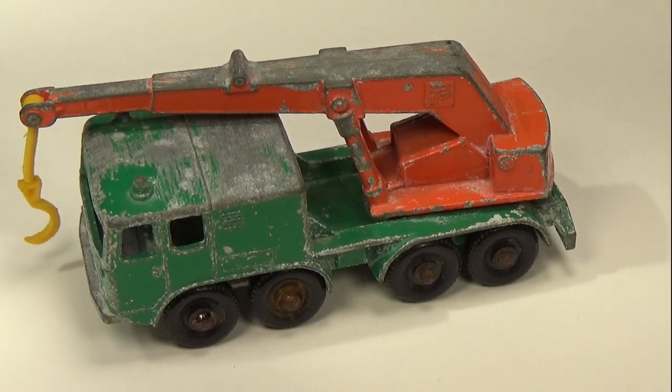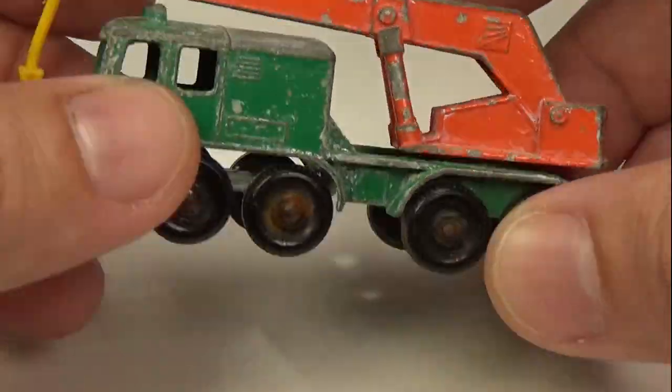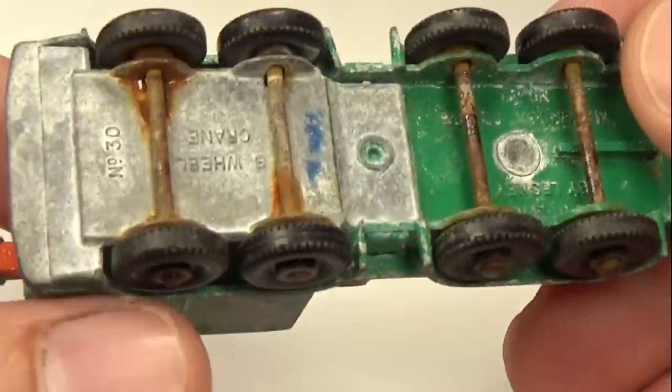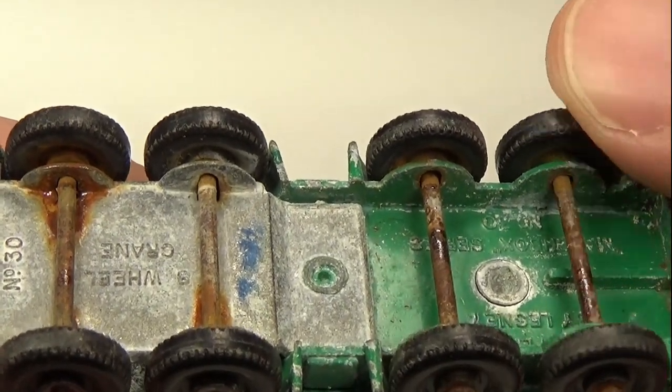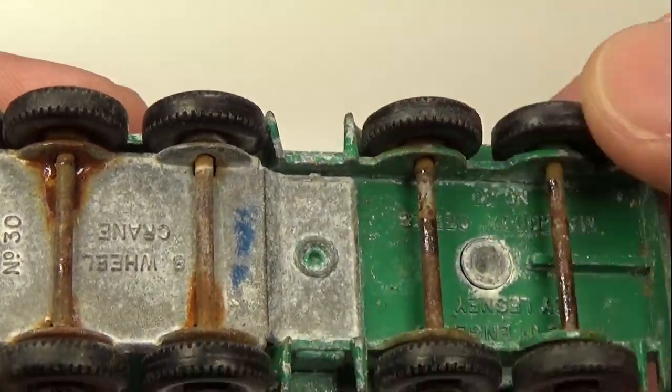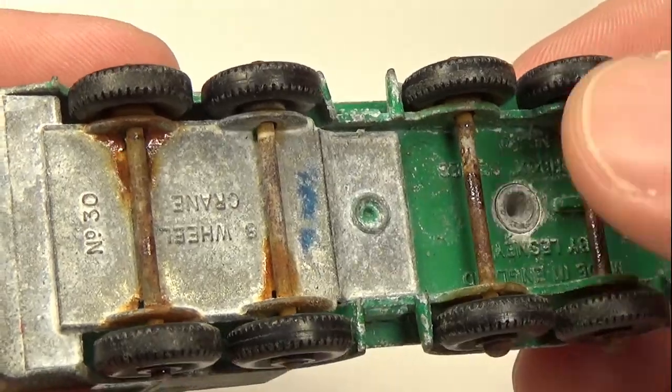This is a Matchbox number 30 8-wheel crane, manufactured around 1965 by Lesney. Lesney produced many models such as this with permanently affixed axles. This made the toys extremely robust, but makes restoring a real pain.